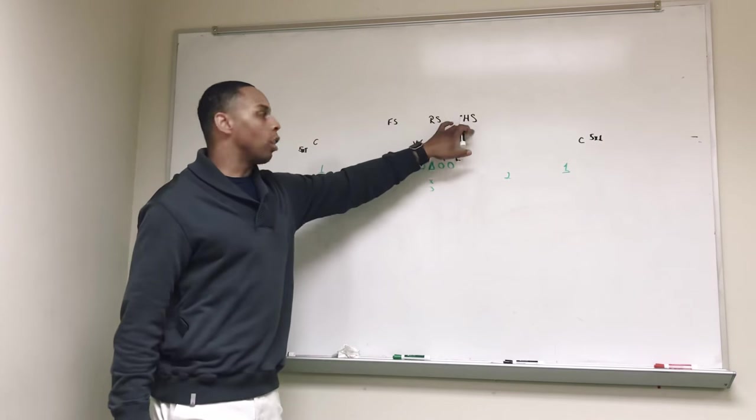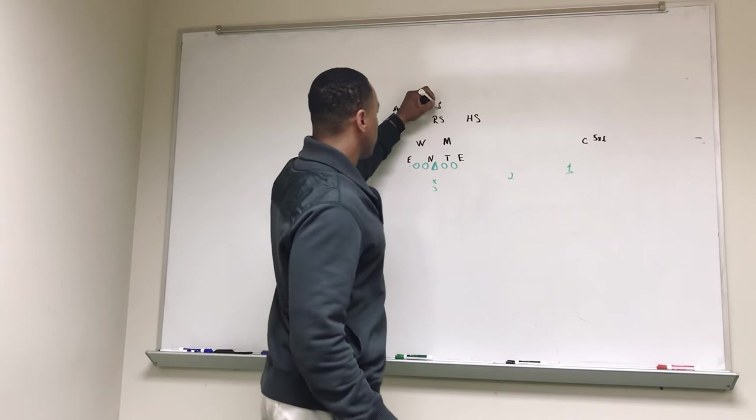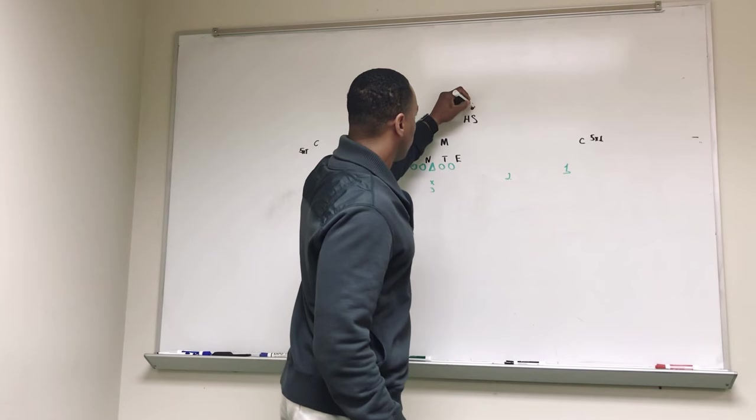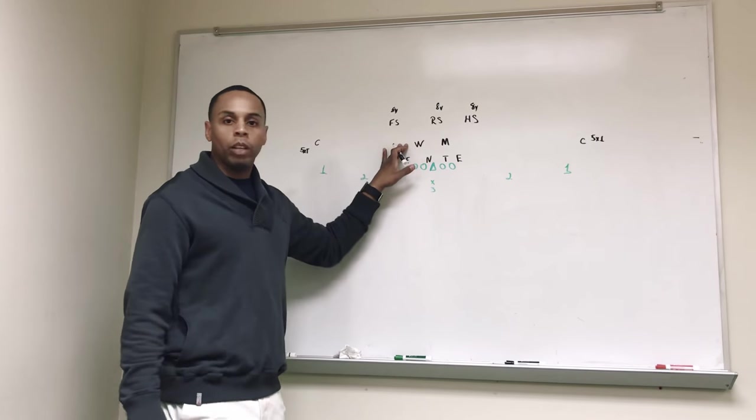Our safeties always start off flat-footed at 8 yards deep, and our linebackers are at 5 yards with their heels on the line.